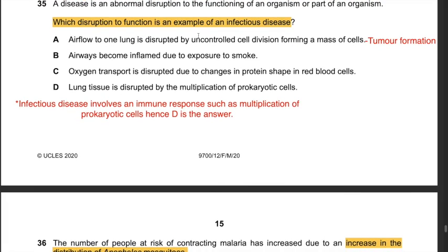Question 35: Which disruption to function is an example of infectious disease? Answer A: uncontrolled cell division forming a mass of cells - this relates to tumor formation, not infectious disease. Answer B: airways inflamed due to smoke exposure - not infectious disease, as infectious disease involves an immune response such as multiplication of prokaryotic cells. Answer C: oxygen transport disrupted due to changes in protein shape in red blood cells - not infectious disease, no immune response involved. Answer D: lung tissue disrupted by multiplication of prokaryotic cells - yes, this is correct. Hence the answer is D.